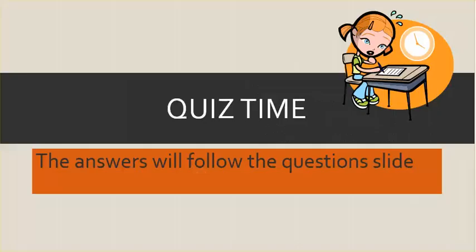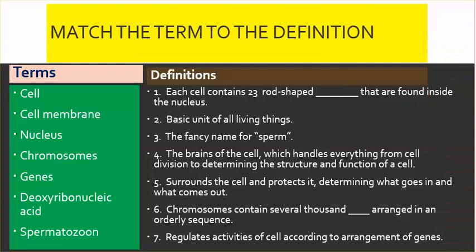Quiz time. Match the term to the definition. The answers will follow the question slide. The terms are: cell, cell membrane, nucleus, chromosomes, genes, deoxyribonucleic acid, and spermatozoan.